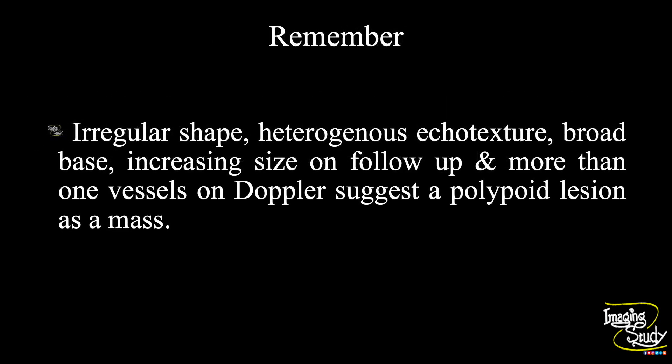Now the take-home message. Irregular shape, heterogeneous echotexture, broad base, increasing size on follow-up scan, and more than one internal vessel on Doppler suggest a polypoid lesion as a mass. So when you are looking at gallbladder polyps, try to search for these points.